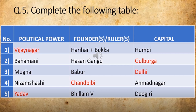For the capital, again three options will be given: Hampi, Gulbarga, and Delhi. You are going to click at the right option — that is Hampi. Hampi was the capital of Vijayanagar Kingdom.